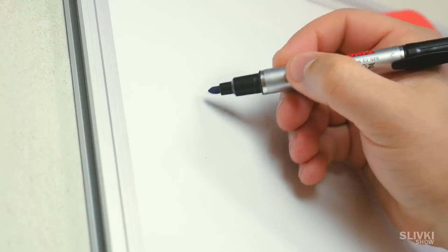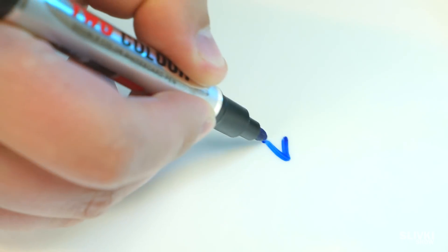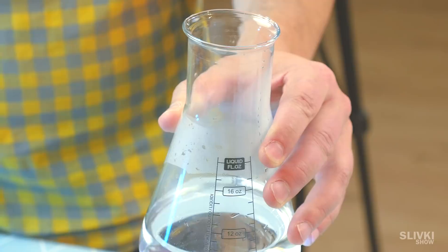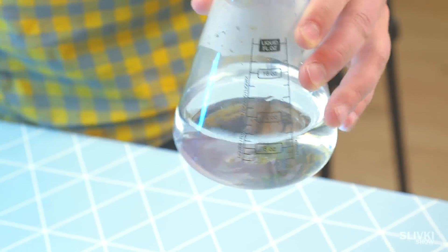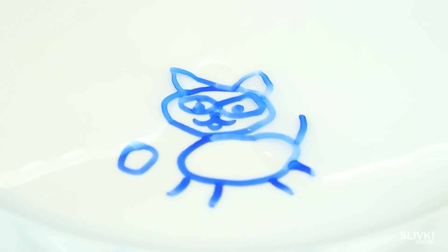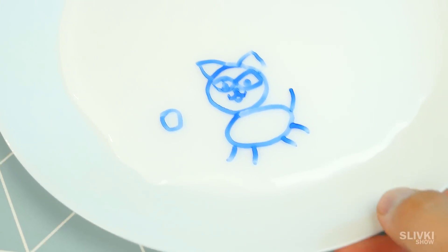Take a plate and marker for whiteboard, which can easily erase. Now we draw something simple, let's say a picture of Cookie with a ball. Next, pour water in the plate. When it contacts with water, the picture starts to peel off and float on the surface of the plate. You see how Cookie plays football.